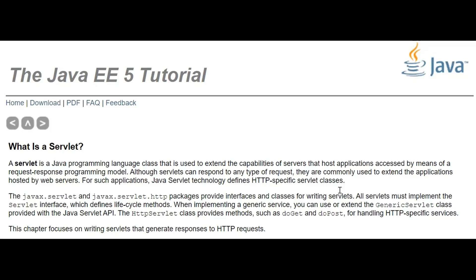Tomcat is an example of a web server. For such applications, Java Servlet technology defines HTTP-specific Servlet classes. The API of the Servlet is in the javax.servlet and javax.servlet.http packages, which provide interfaces and classes for writing Servlets.